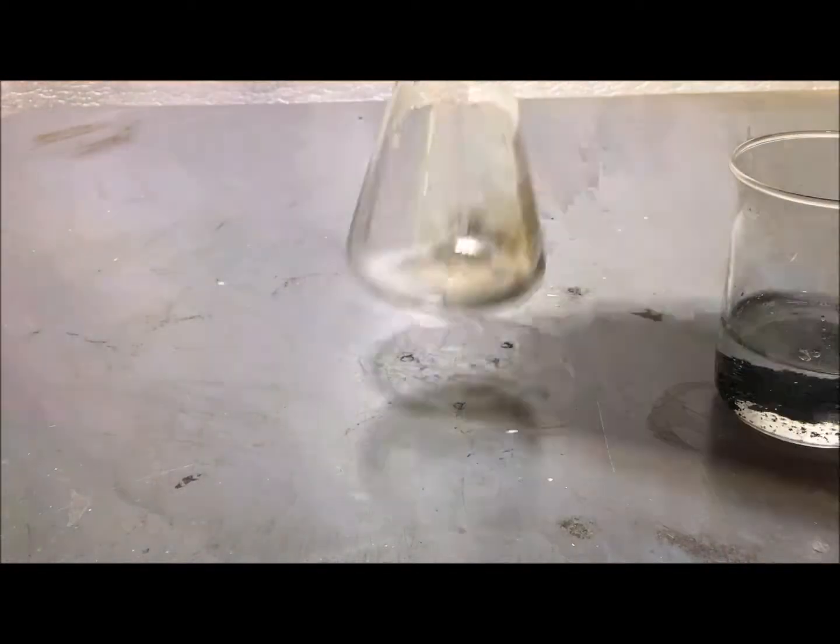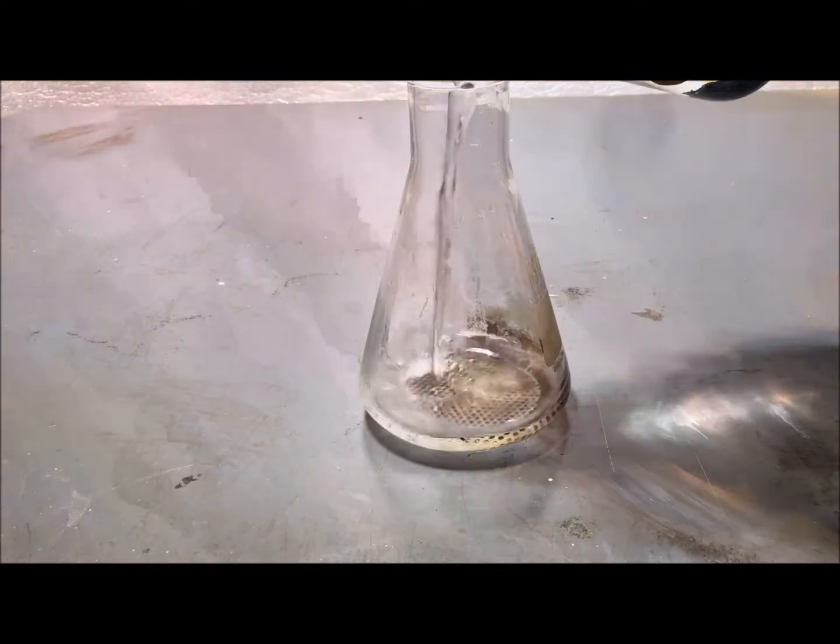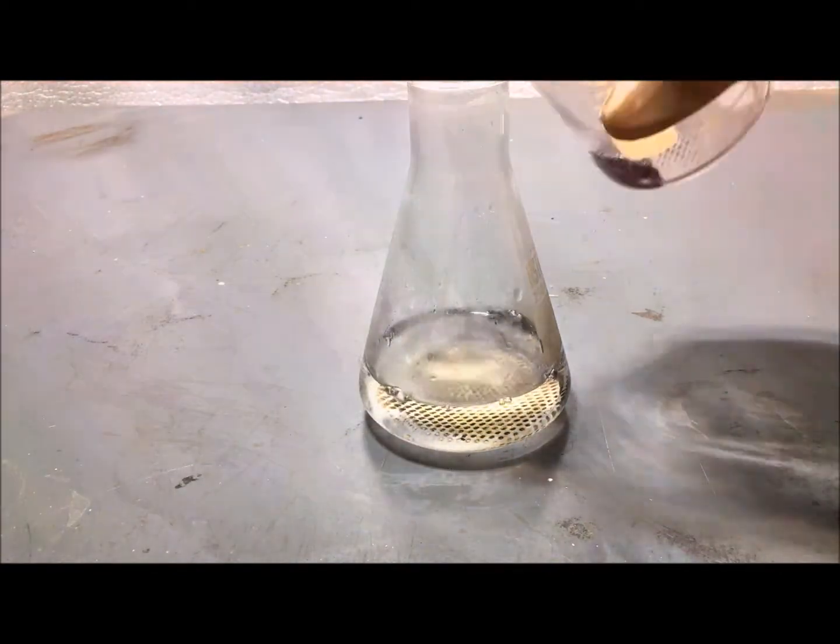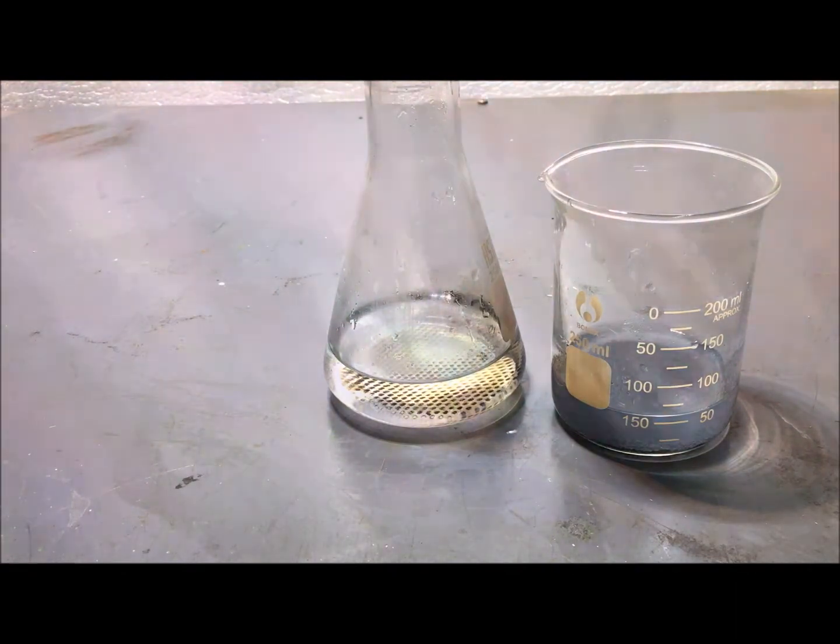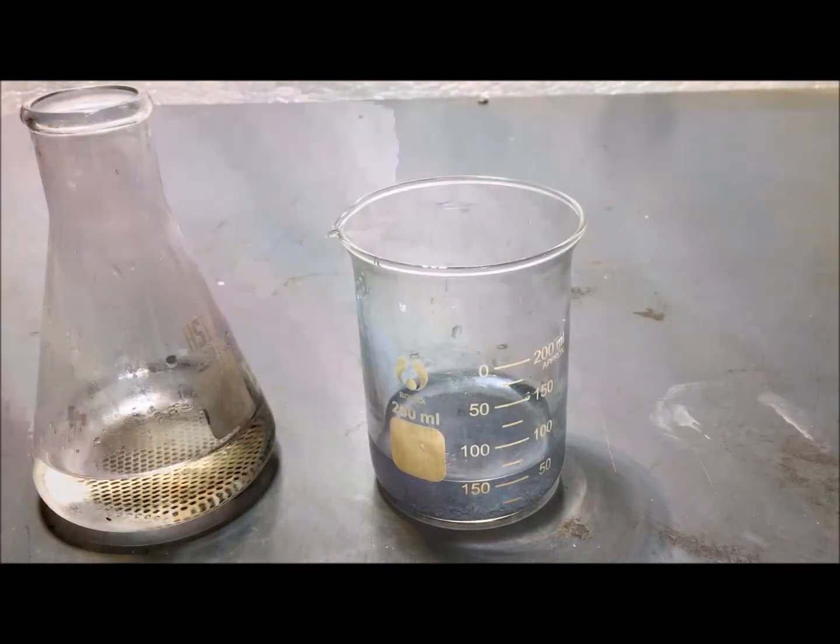After some time, you will see the zinc metal deposited onto the carbon electrode. You might want to agitate the solution, because once enough zinc is deposited onto the electrode, production seems to slow down a lot.